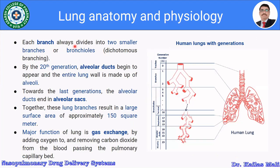Each bronchus always divides into two smaller branches or bronchioles — that is dichotomous branching — giving a total of 23 generations. By the 20th generation, alveolar ducts begin to appear and the entire lung wall is made up of alveoli. Towards the last generation, the alveolar duct ends in an alveolar sac. Together, these lung branches result in a large surface area of approximately 150 square meters.